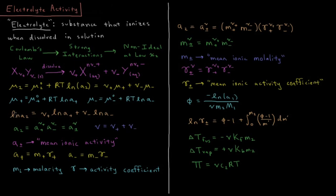The natural log of the activity of the electrolyte equals ν+ ln(a+) plus ν− ln(a−). Therefore, the activity of the electrolyte equals a+ raised to the power ν+ times a− raised to the power ν−. This is also equal to what's defined as the mean ionic activity, a±, raised to the power ν, where ν is the total stoichiometric coefficient: ν = ν+ + ν−.